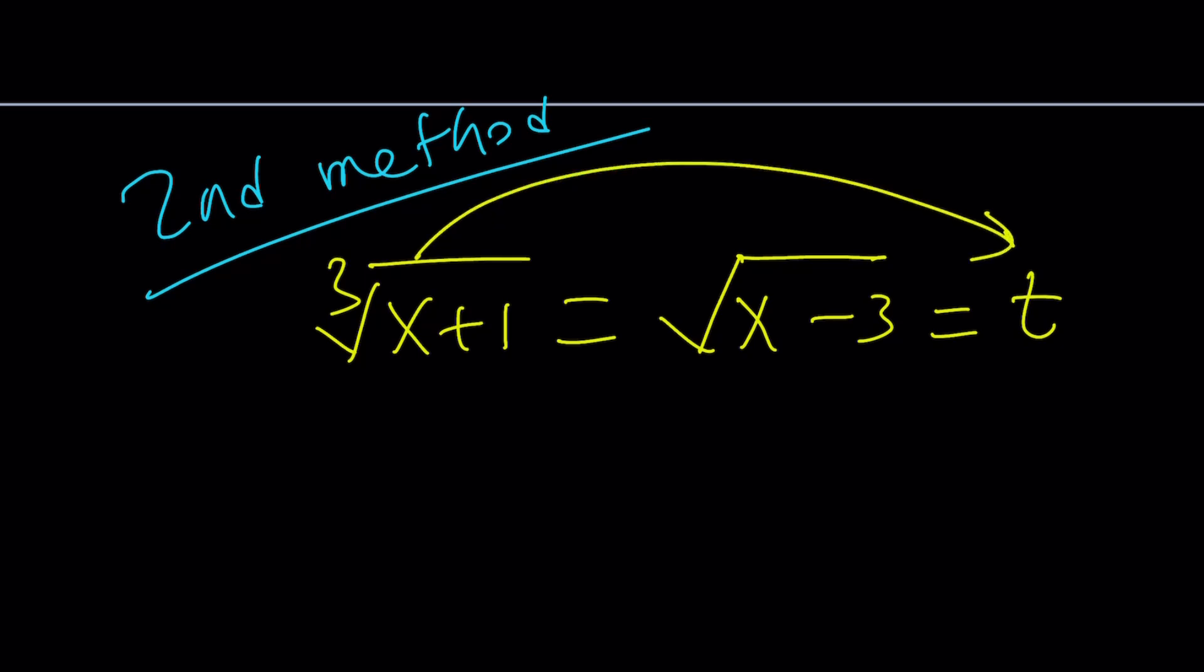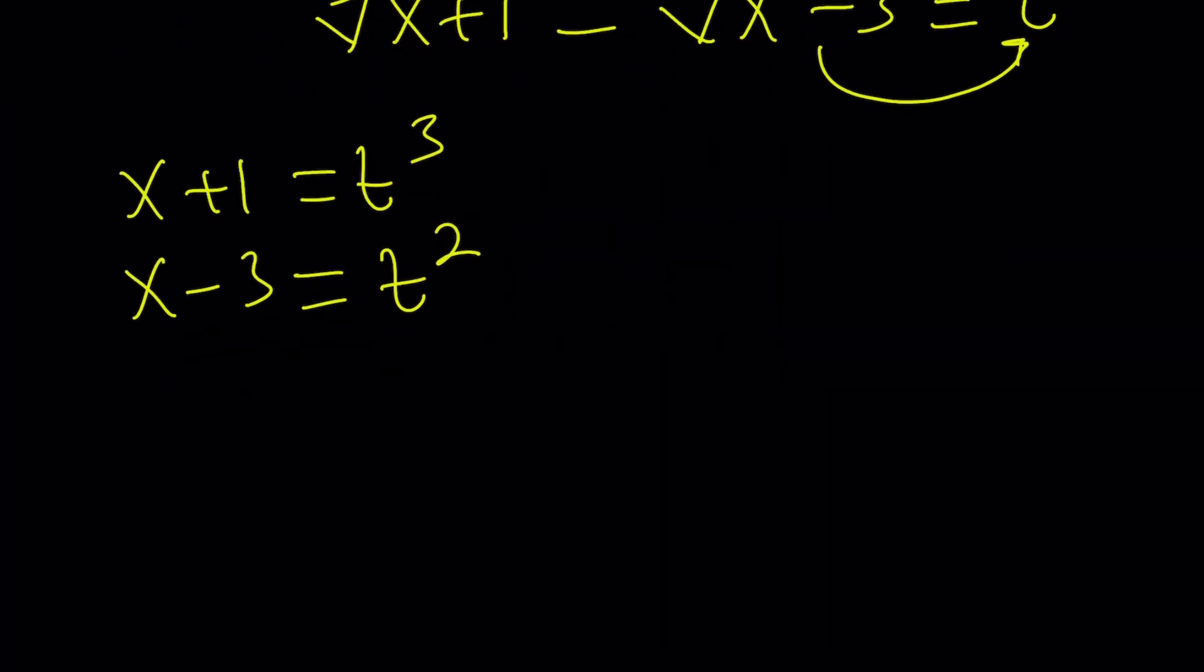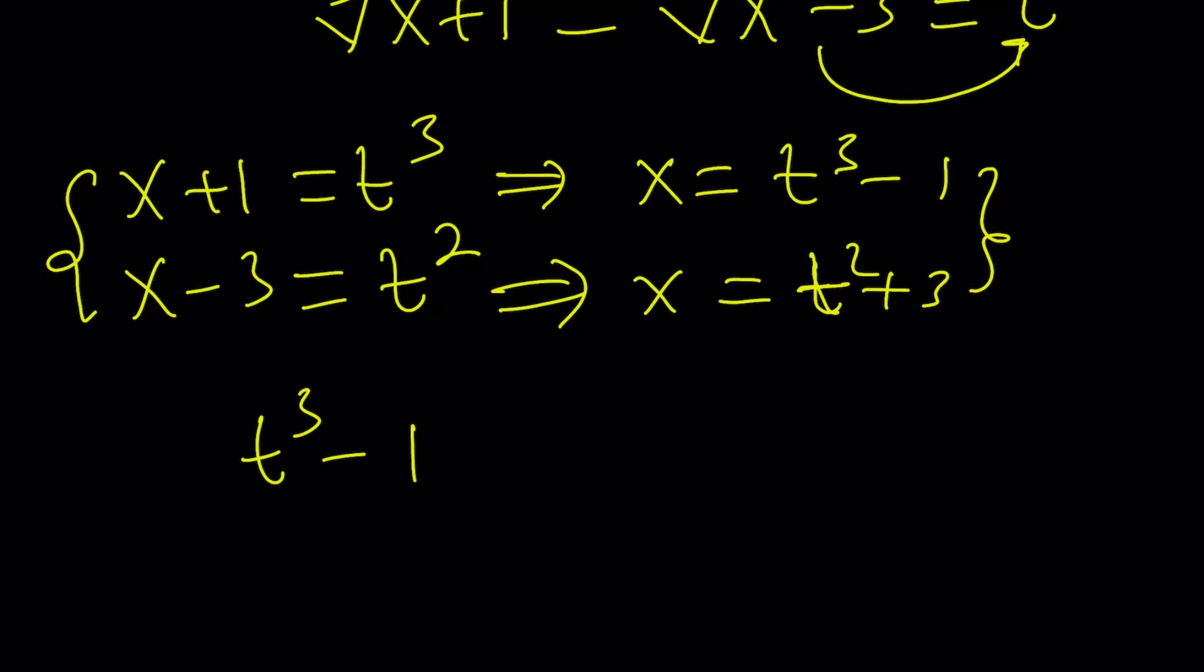From the first equation, if you cube both sides, you get x plus 1 equals t cubed. From the second equation, if you square both sides, you get x minus 3 equals t squared. See how easy that is compared to the sixth power method. We can extract x from these equations: x is t cubed minus 1, and x is t squared plus 3. If two things are equal to the same thing, then they're equal. So t cubed minus 1 needs to equal t squared plus 3.